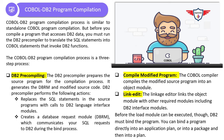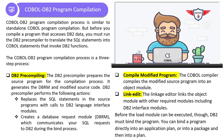In stage two, the COBOL compiler compiles the modified source program into an object module. The last stage is link edit, where the linkage editor links the object module with other required modules, including DB2 interface modules. Remember that before the load module can be executed, DB2 must bind the program — either directly into an application plan, or into a package and then into an application plan, depending on your project.